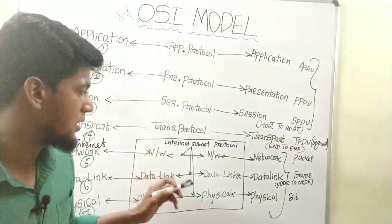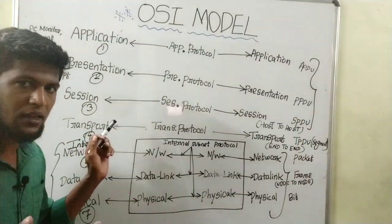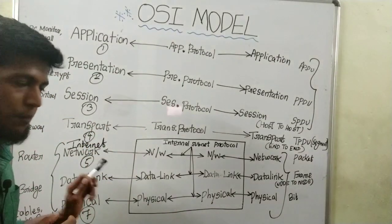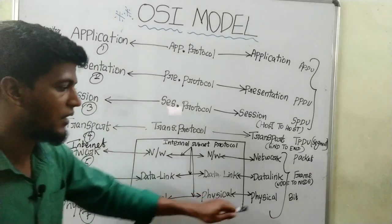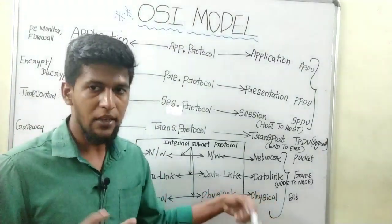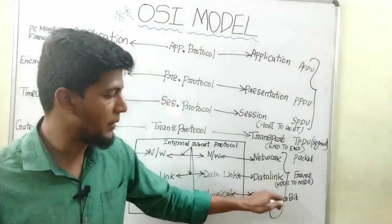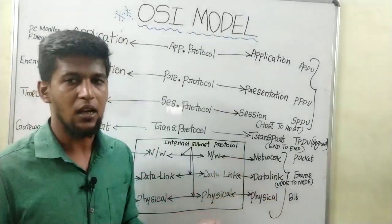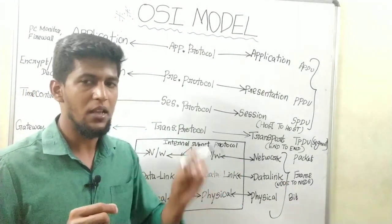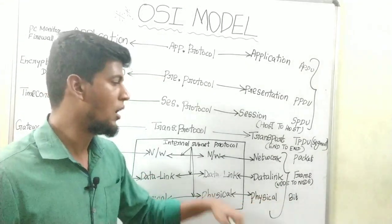First, the physical layer. For an example, you can write the information. How do you create the information? That is the bit. The bits are 0s and 1s.